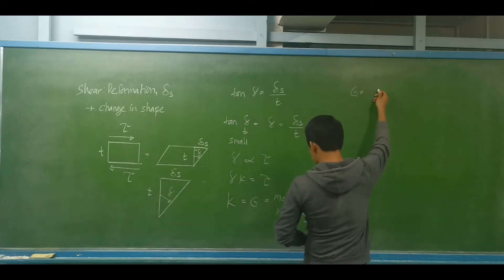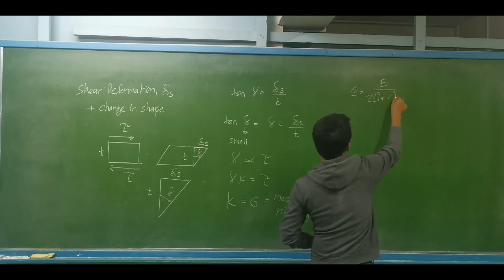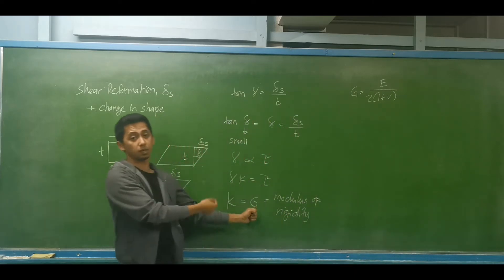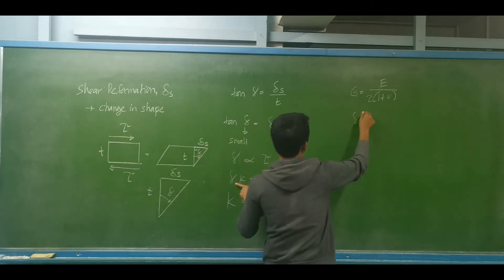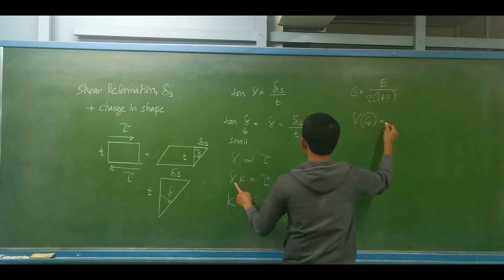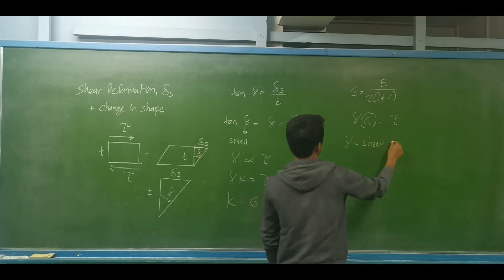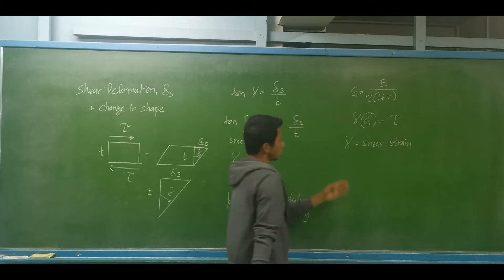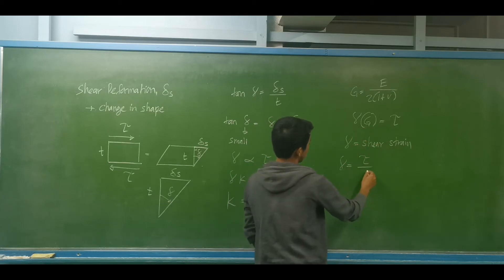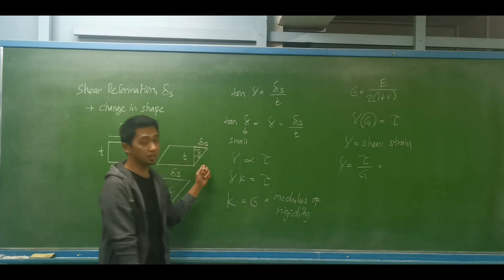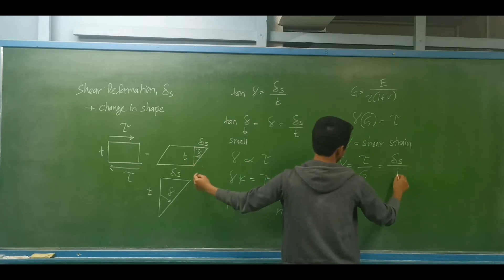The modulus of rigidity G is equal to the modulus of elasticity E divided by twice the quantity one plus Poisson's ratio. So we can write: gamma equals shearing stress divided by G, which is also equal to the shear deformation delta sub S divided by the thickness of the material. Gamma is simply the shear strain.